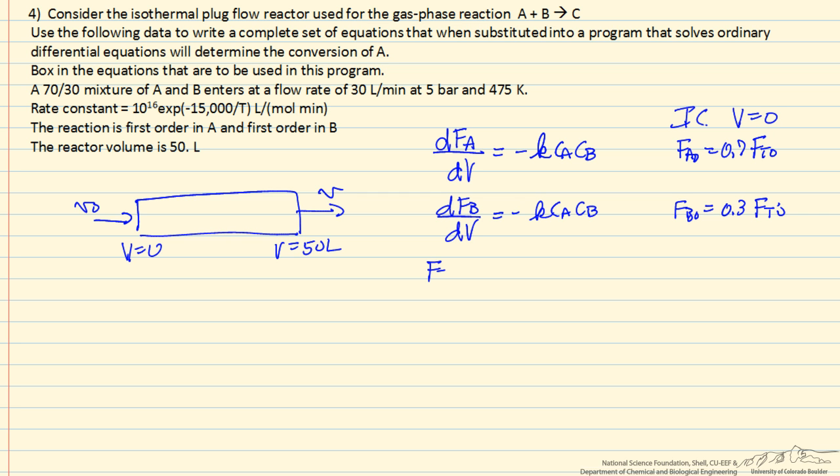So we're going to have to calculate F total coming into the reactor. And we use the ideal gas law to determine this: pressure times volumetric flow rate over the gas constant and absolute temperature. So we have the total flow rate coming in. We can get a numerical value for this. That allows us to determine when FA0 and FB0 are initial conditions.